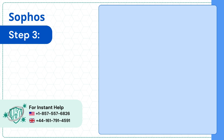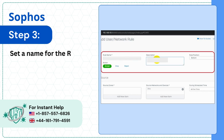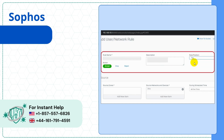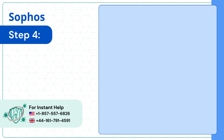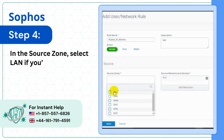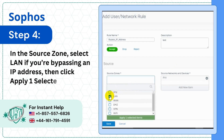Step 3: Set a name for the rule, fill in the description, and set the rule position to Top. Step 4: In the Source Zone, select LAN. If you're bypassing an IP address, click Apply One Selected Items.